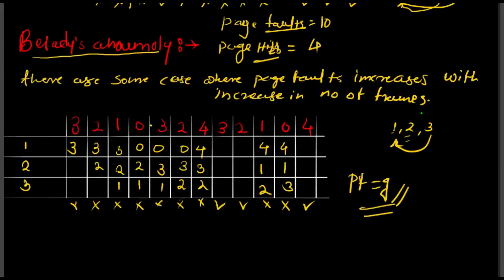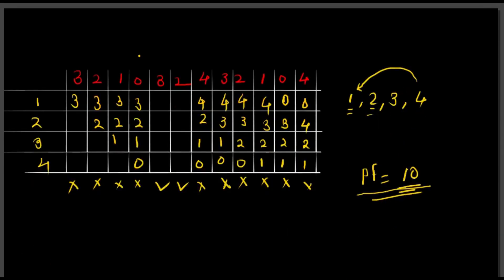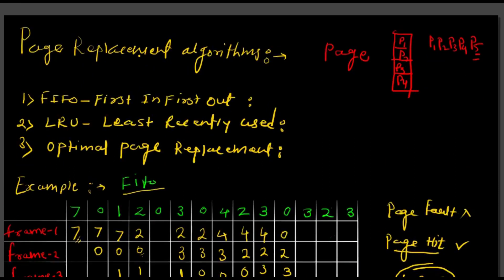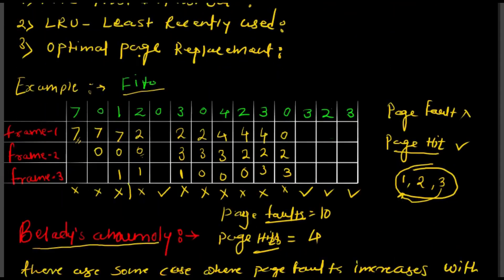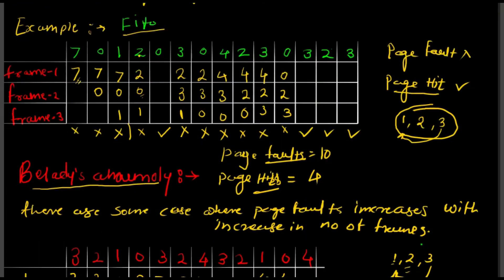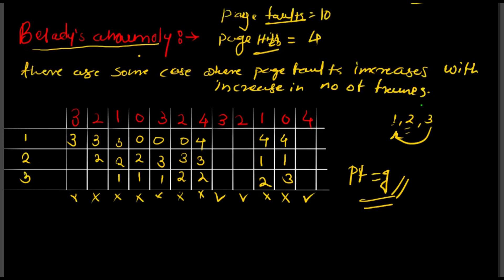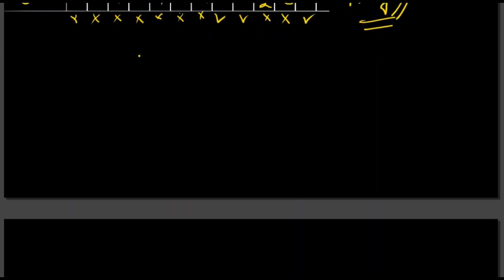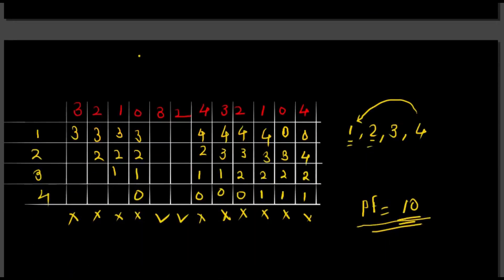Normally, page faults decrease with an increasing number of frames, but FIFO is an exception — for some examples, page faults increase with more frames. In this lecture we have understood the three paging schemes: FIFO, LRU, and Optimal. We worked through the FIFO example, understood page fault and page hit, counted page faults, and studied Belady's Anomaly. In the next lecture we will cover the remaining two algorithms: Optimal Page Replacement and LRU Page Replacement. Thank you.